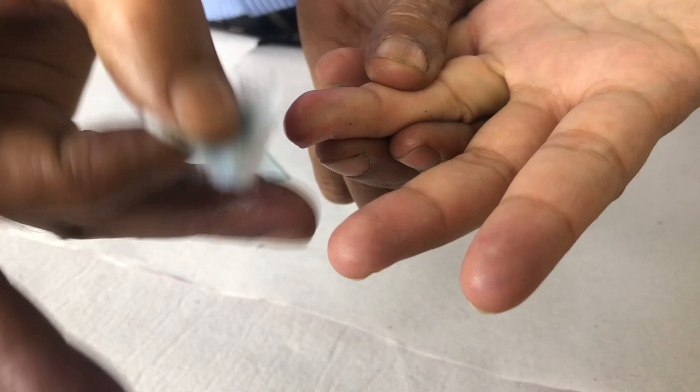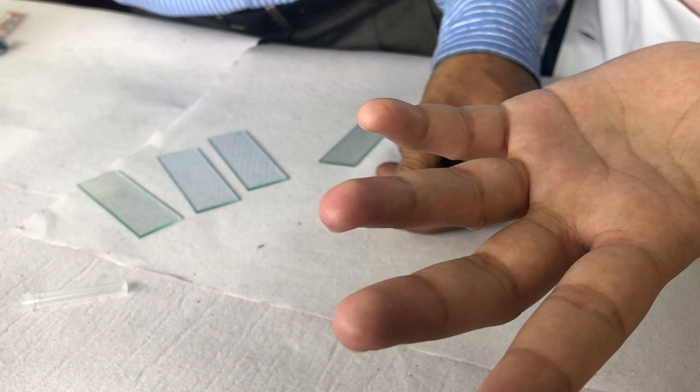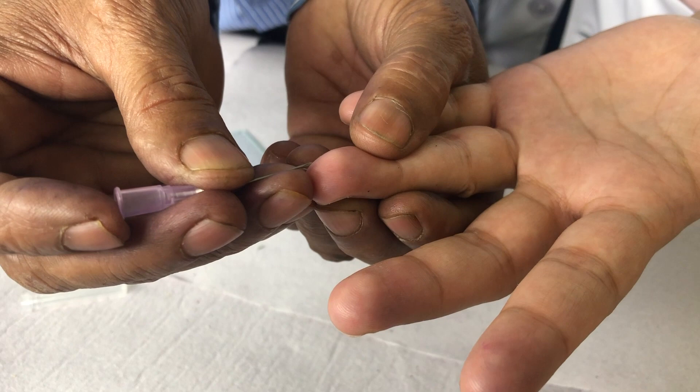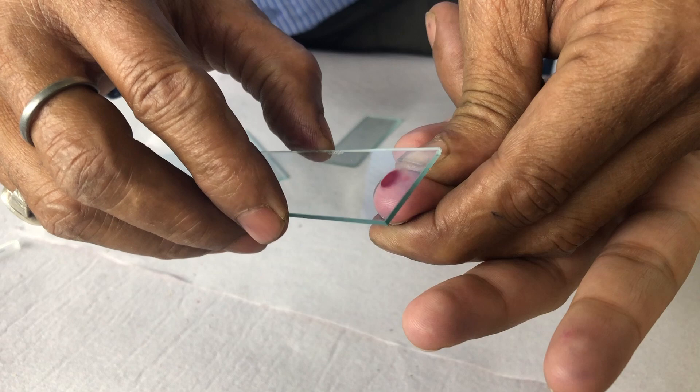For making the prick, we can use the ring finger. We need to wipe clean the ring finger with spirit and use any disposable needle for this purpose. A sharp prick is to be made, and you should ensure that you should not squeeze that.